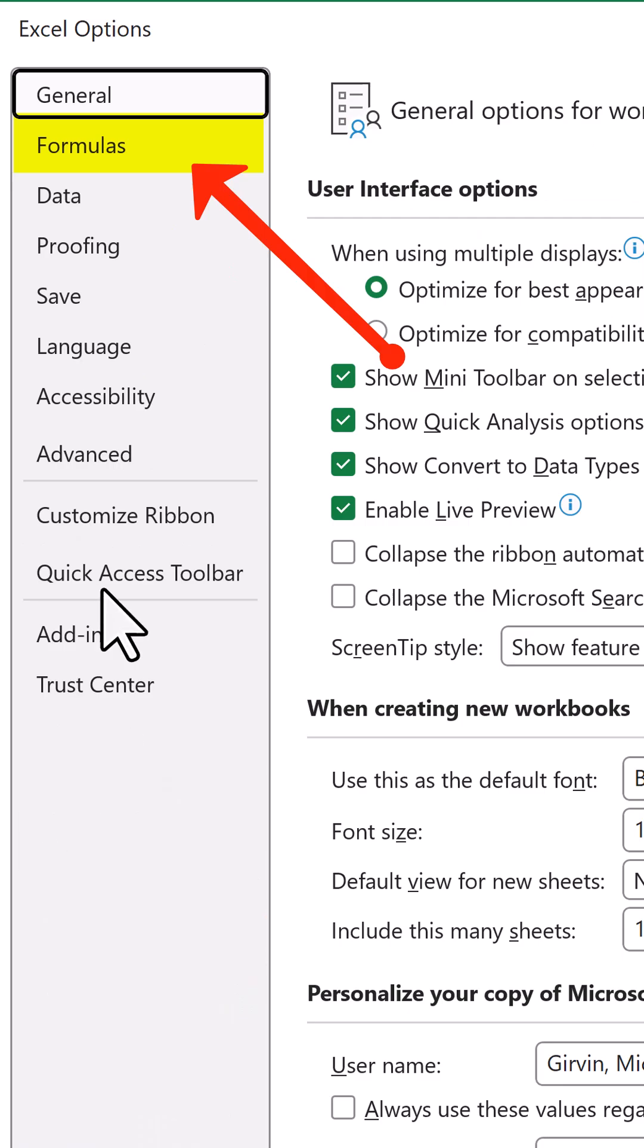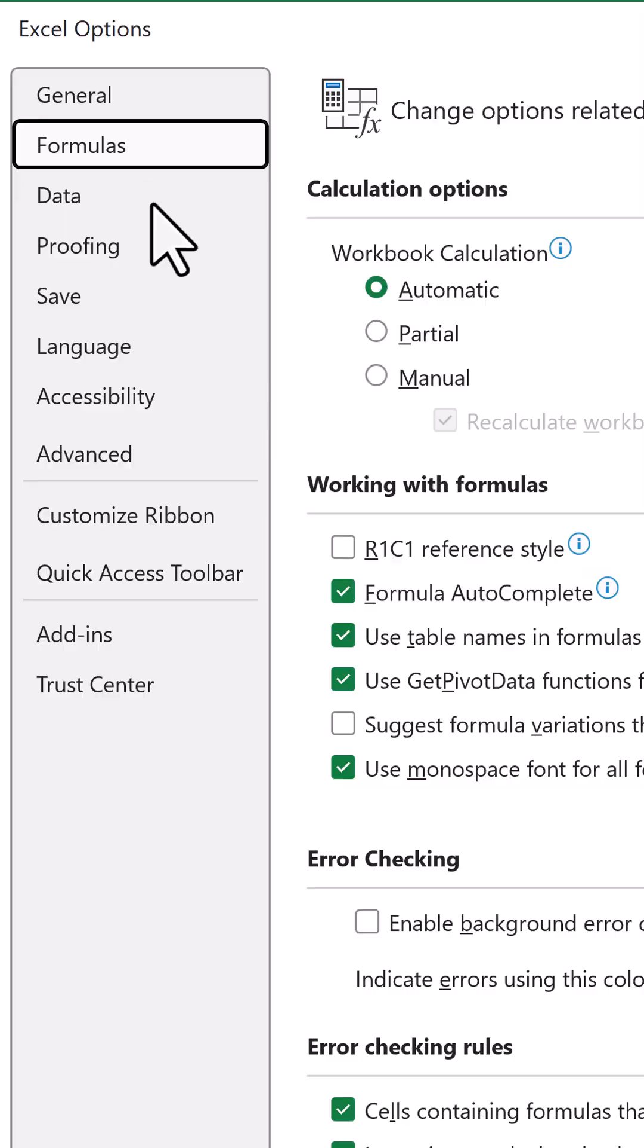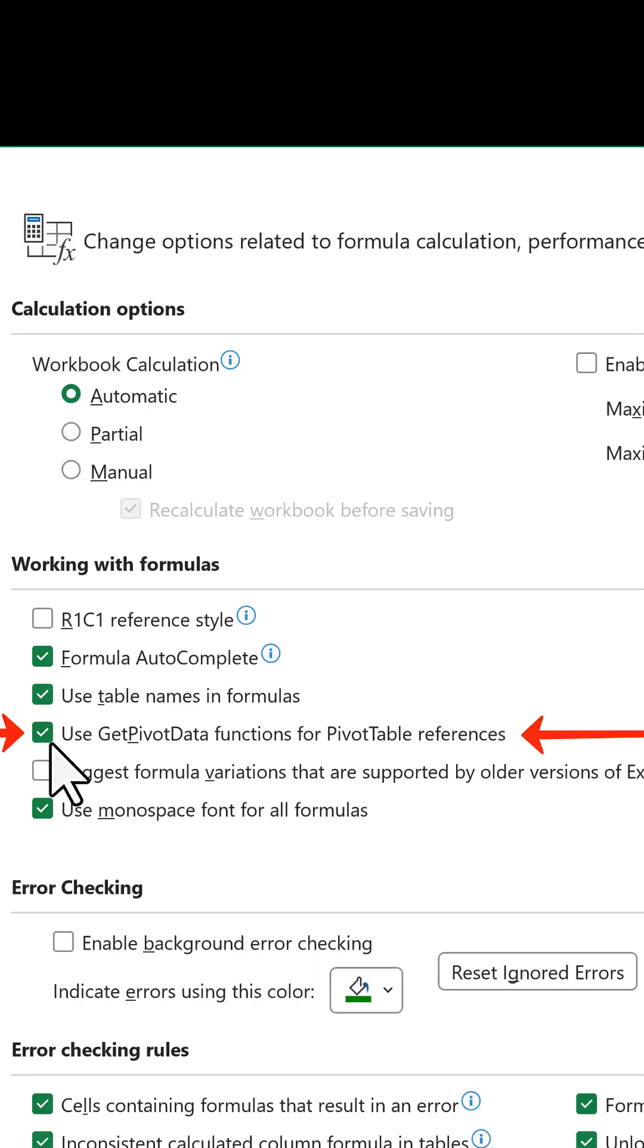File, Options, on the left, Formulas. And there it is. Let's uncheck this option. Click. OK.